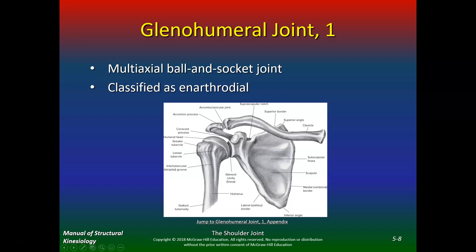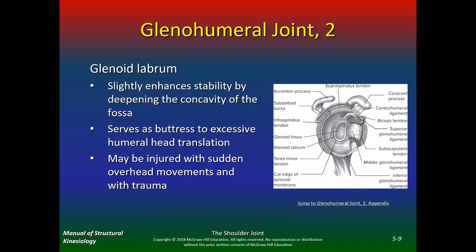There's the clavicle and the acromion process. The glenoid labrum, which is injured in a lot of overhead athletes especially pitchers, slightly enhances stability by deepening the concavity of the fossa. It serves as a buttress to excessive humeral head translation, preventing it from going too far superior, inferior, anterior, or posterior. It may be injured with sudden overhead movements and with trauma.